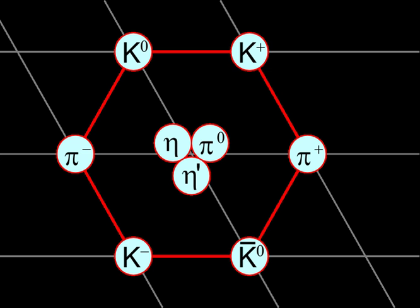Bosons are one of the two fundamental classes of particles, the other being fermions. Bosons are characterized by Bose-Einstein statistics and all have integer spins. Bosons may be either elementary, like photons and gluons, or composite, like mesons. According to the standard model, the elementary bosons are: